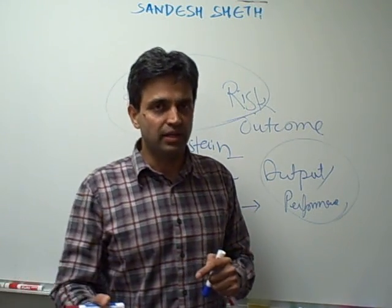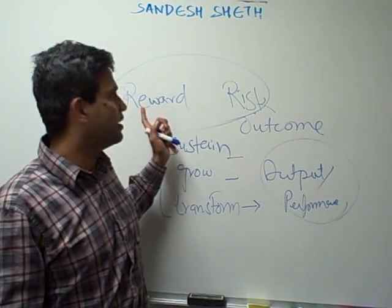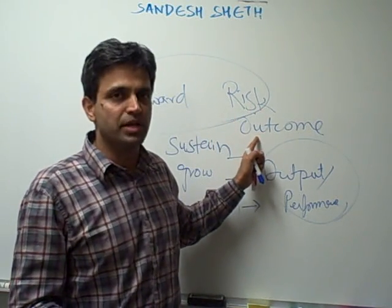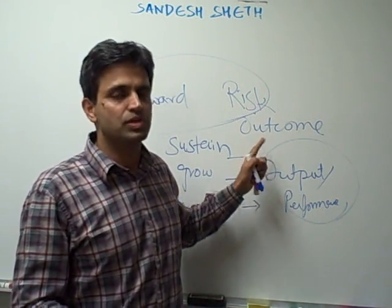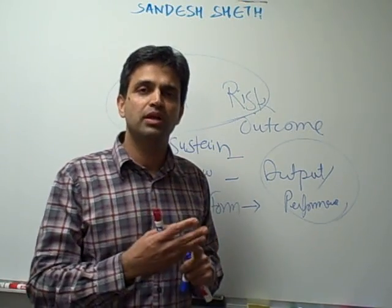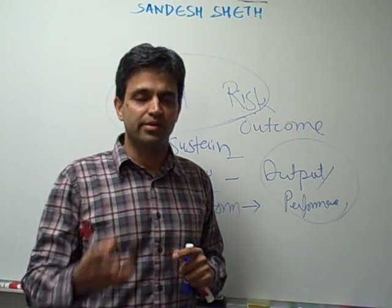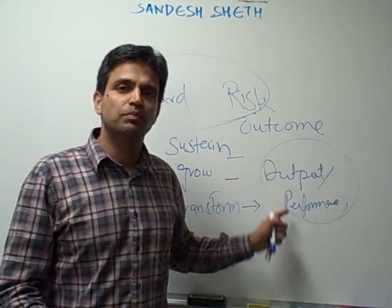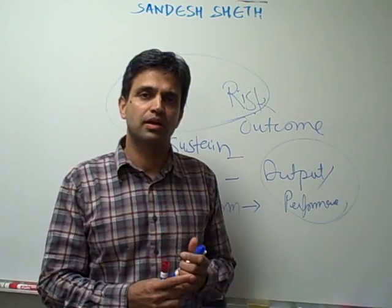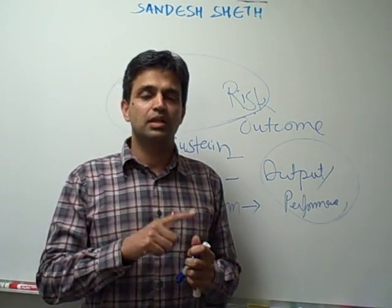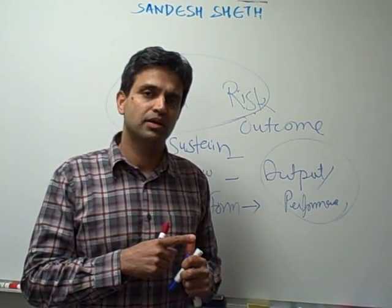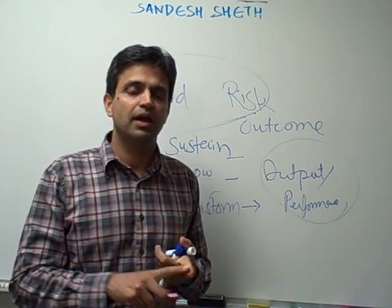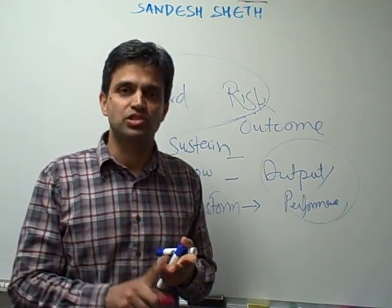In IT governance, we have reward and risk as the outcome measures — which I said were value delivery and risk management. And the performance measures are performance management, resource management, and strategic alignment.